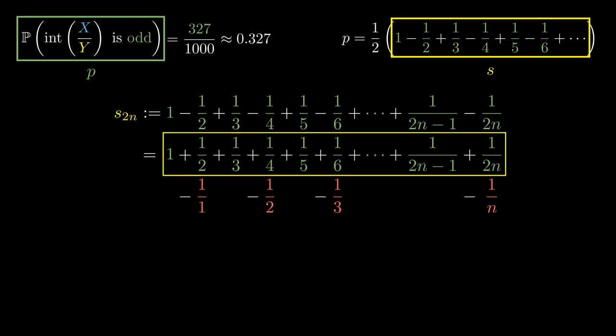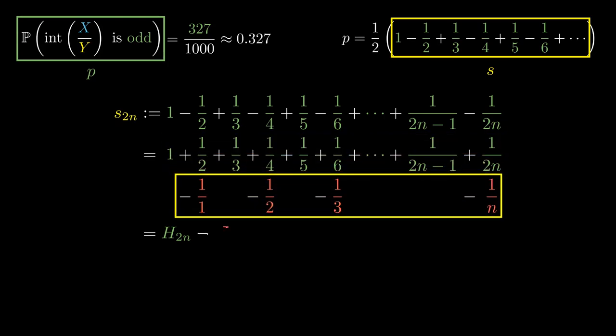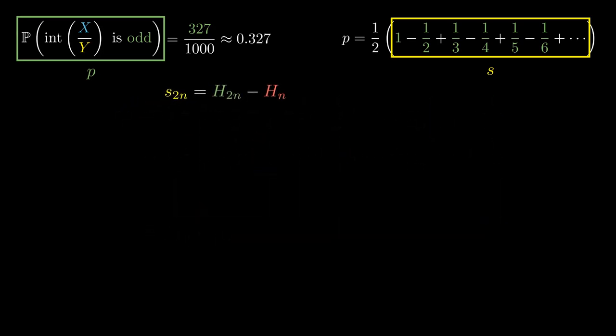The green sum is the sum of the first two n harmonic numbers, while the red terms that we are subtracting are actually the first n harmonic numbers. This means that the sum of the first two n terms is really a difference of harmonic sums. But what is this difference and how actually do we make sense of it?